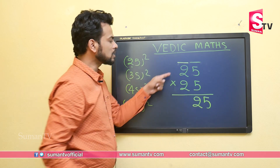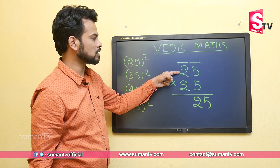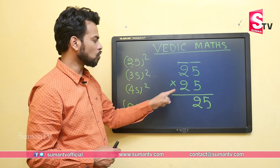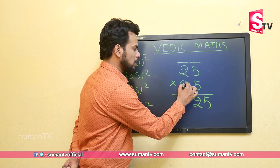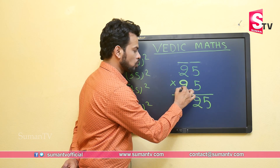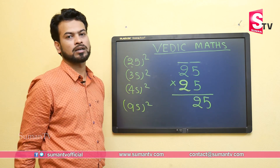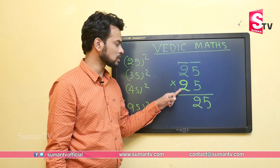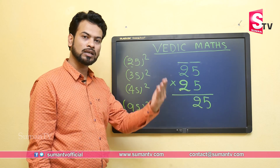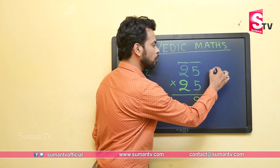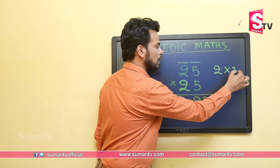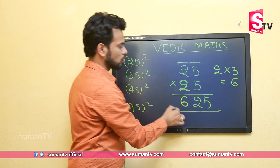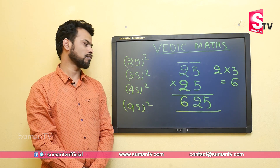Now let's come to the tens digit. The upper tens digit is 2 and the lower tens digit is also 2. We multiply this 2 with its successor — the successor of 2 is 3 — so we multiply 2 with 3 and get 6. So 25 multiplied by 25 is 625.